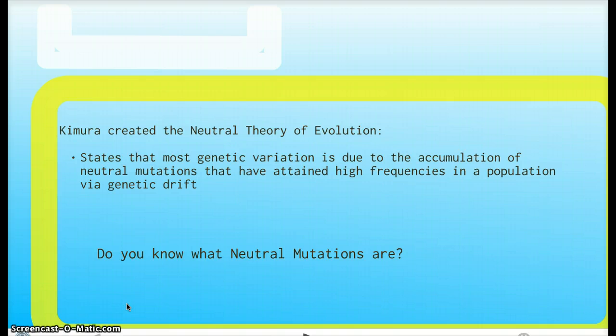So Kimura created the neutral theory of evolution, which pretty much states that most genetic variation is due to the accumulation of neutral mutations that obtain high frequencies in a population via genetic drift.